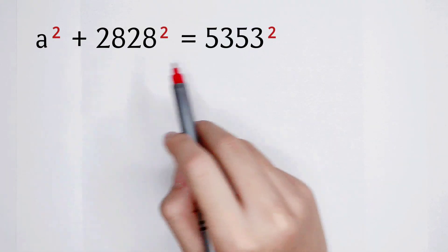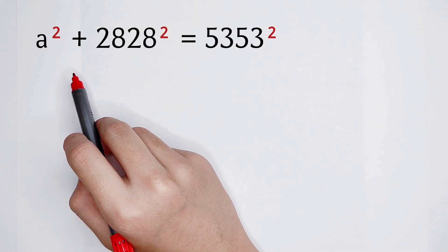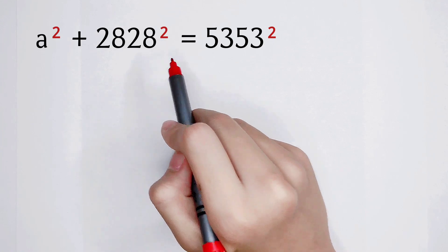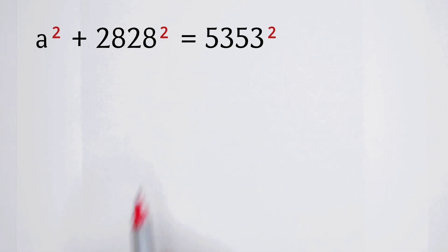Solve the value of a from this equation: a² + 2828² = 5353². How can I solve it?